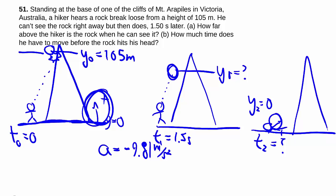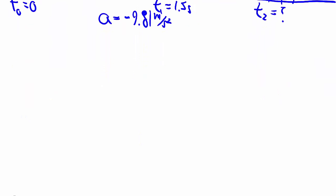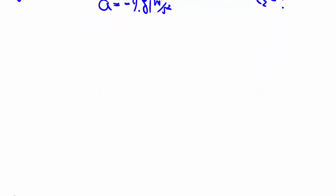For part a we want y1. Because acceleration is constant, we have our kinematics formula, so this is for part a. y1 is equal to y0 plus v0 t plus 1 half a t square.